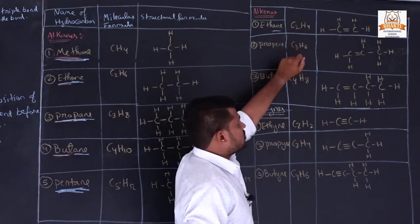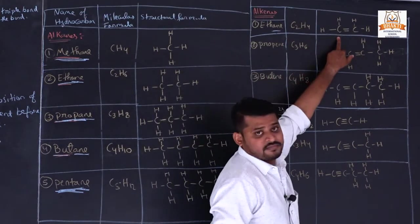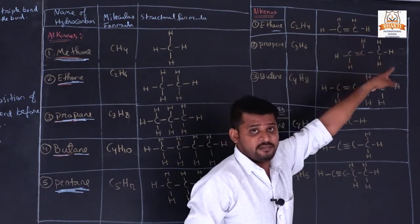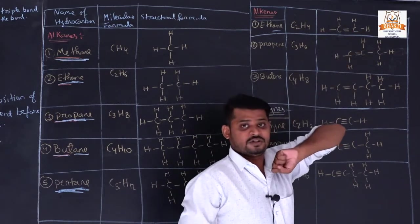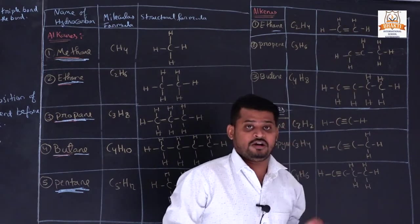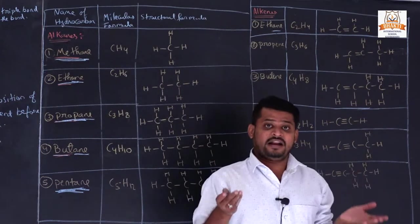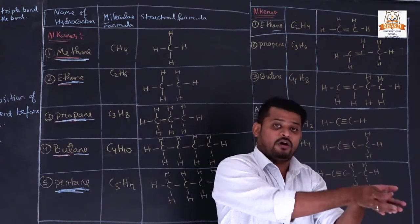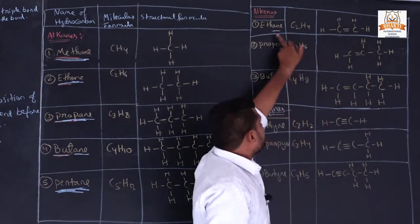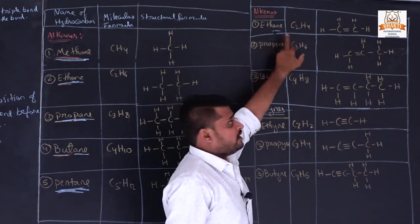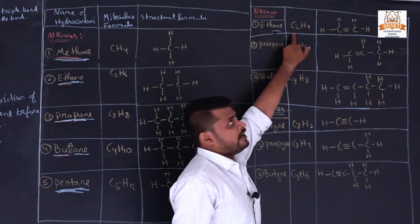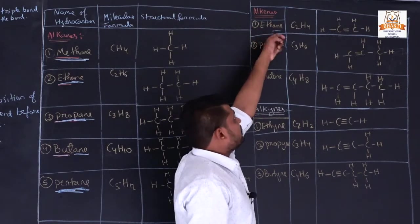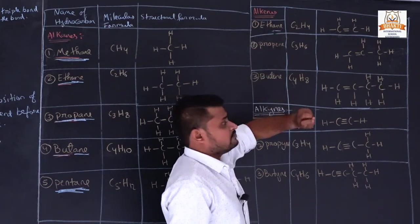So if carbon atoms combine with another carbon atom with a double bond, it is called '-ene'. Here the number of carbon atoms is 2, so it is 'eth-' with a double bond: ethene.